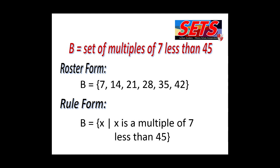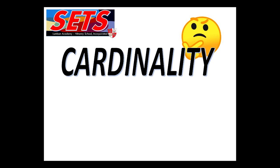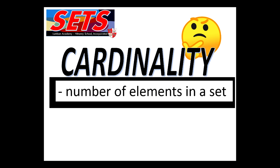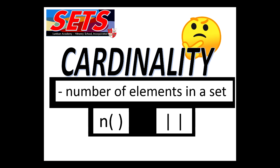The third basic set concept we will discuss is cardinality. What is cardinality? Cardinality refers to the number of elements in a set. In symbol, we can use the small letter N followed by parentheses with the name of the set inside.